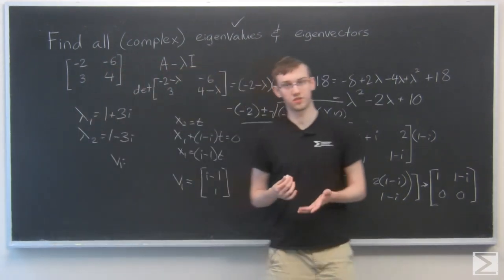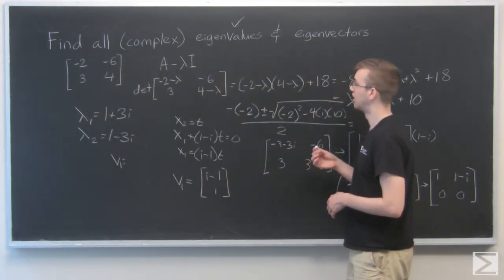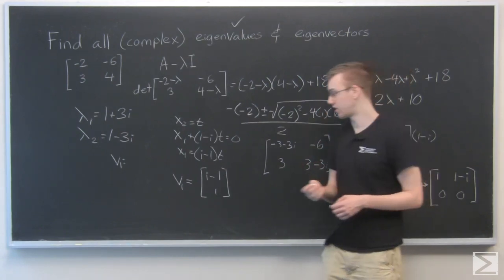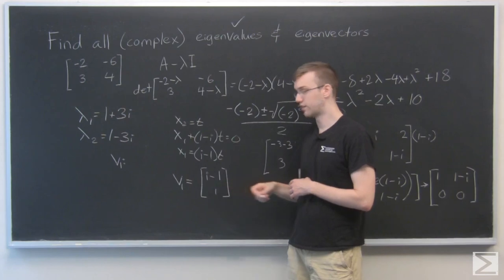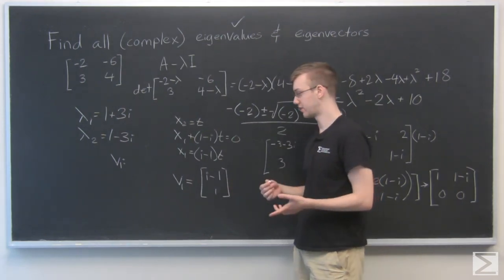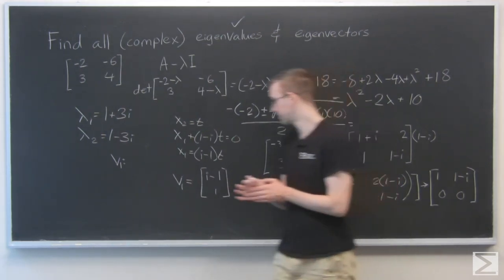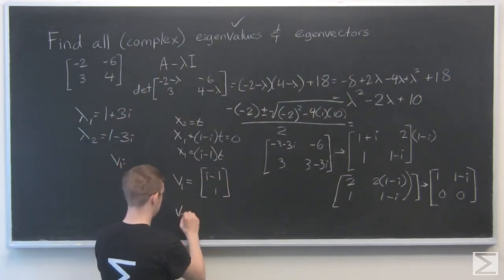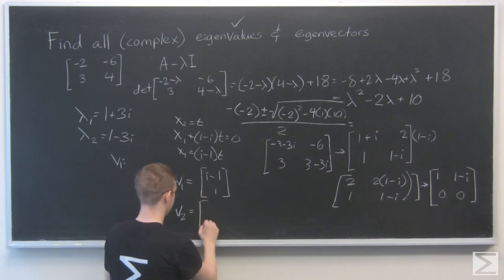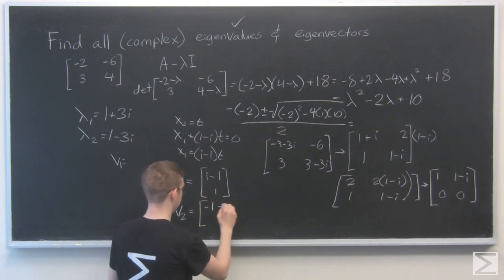And now, because of the properties of complex eigenvalues, to find the other eigenvector, all I need to do is find the complex conjugate of i minus 1. And that's going to be negative i minus 1. I just need to flip the negative on the i. So v2 would be negative i minus 1, 1.